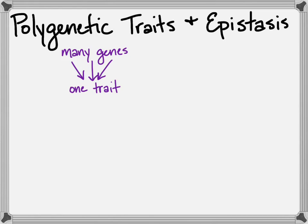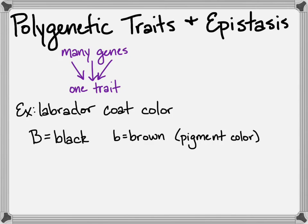And so this can happen with albinism, but it also happens with coat color in Labradors. So we're going to talk about chocolate, black, and yellow labs. So first of all, there's two genes at play here. There's the one for pigment coloration, and black is dominant to brown or chocolate. And you may say, where's the yellow?